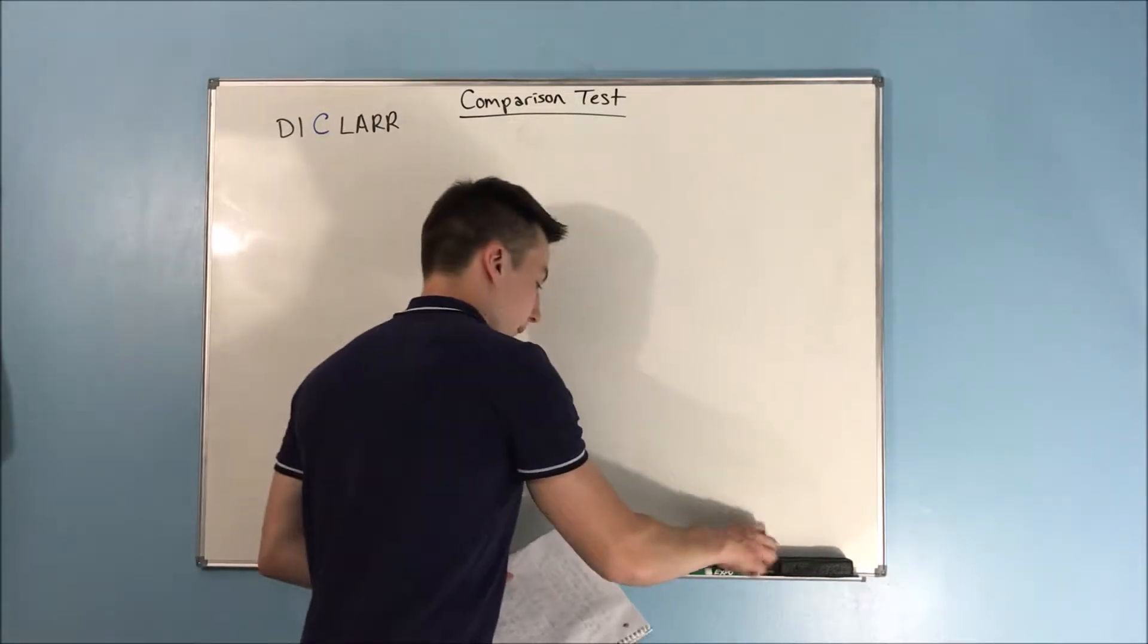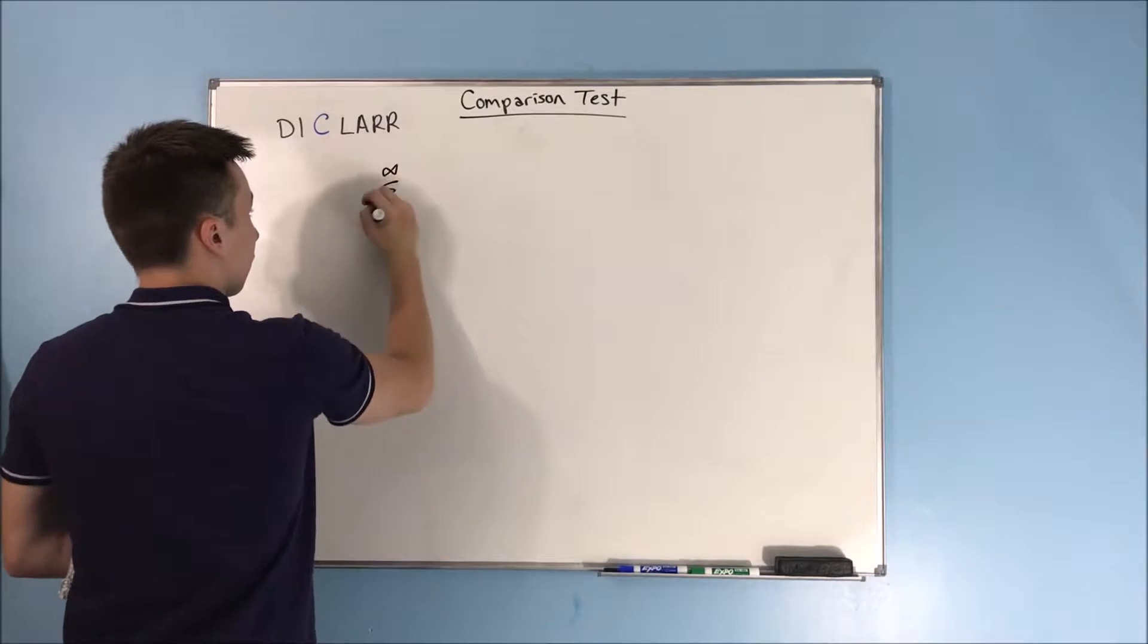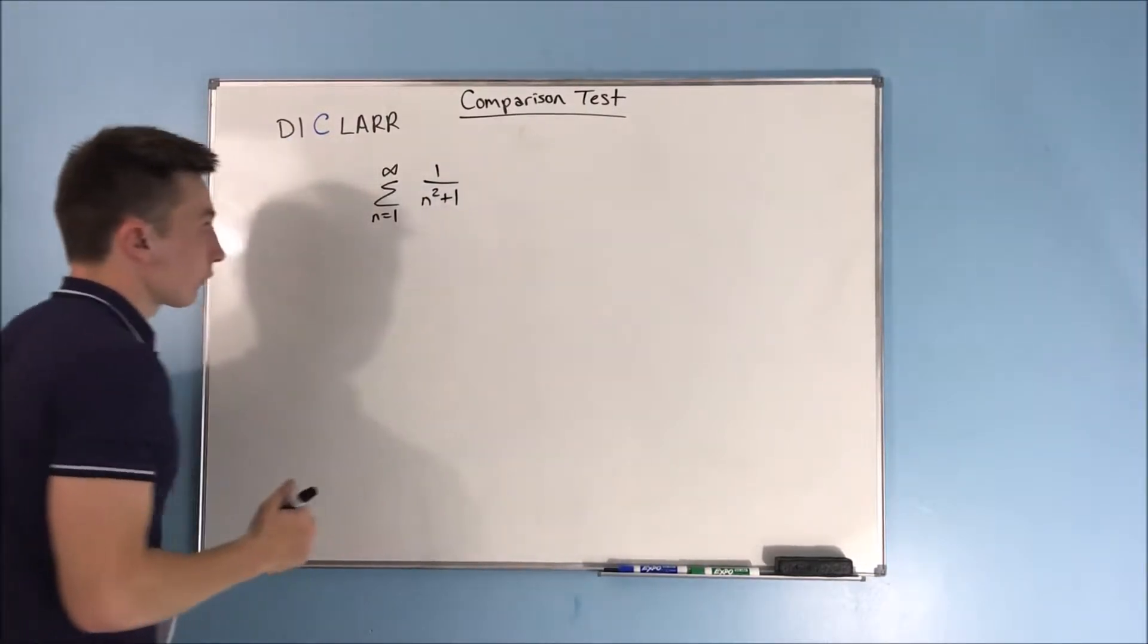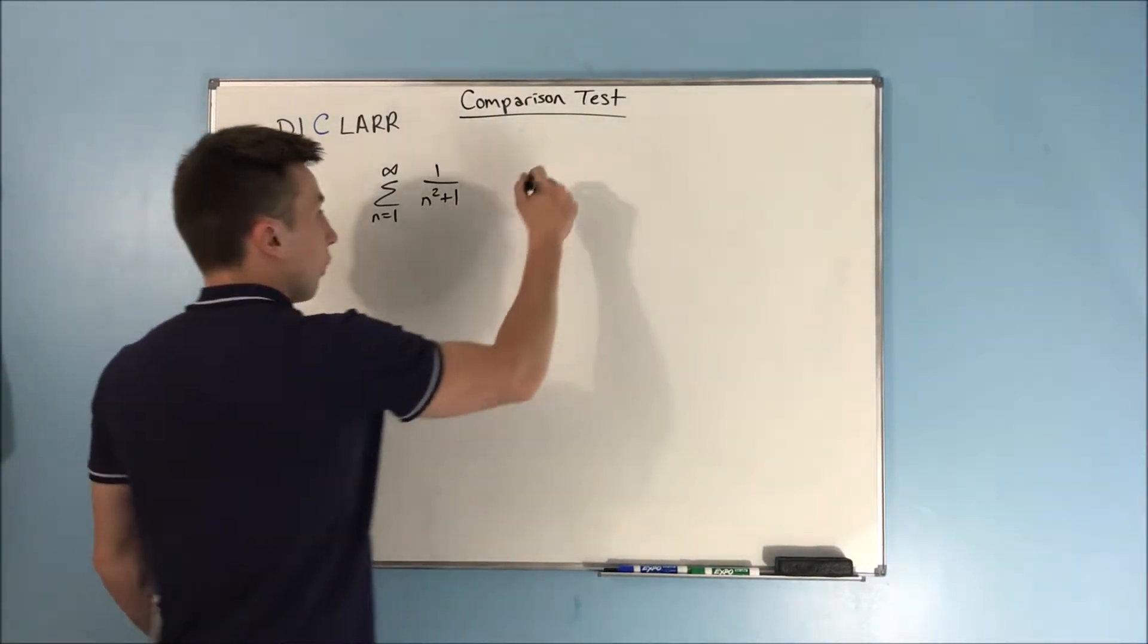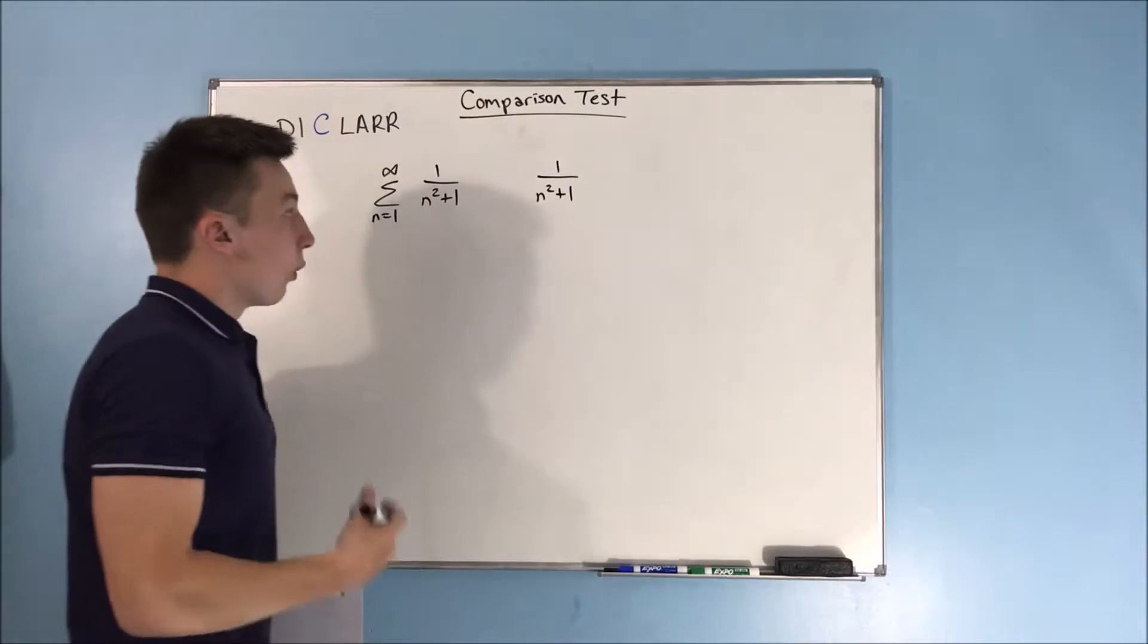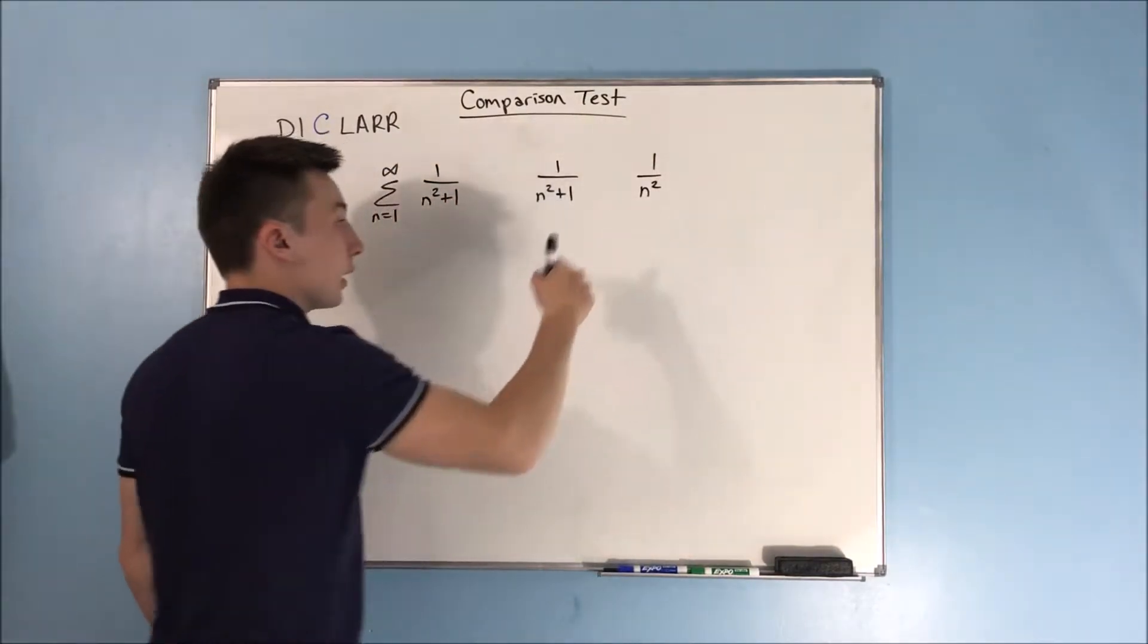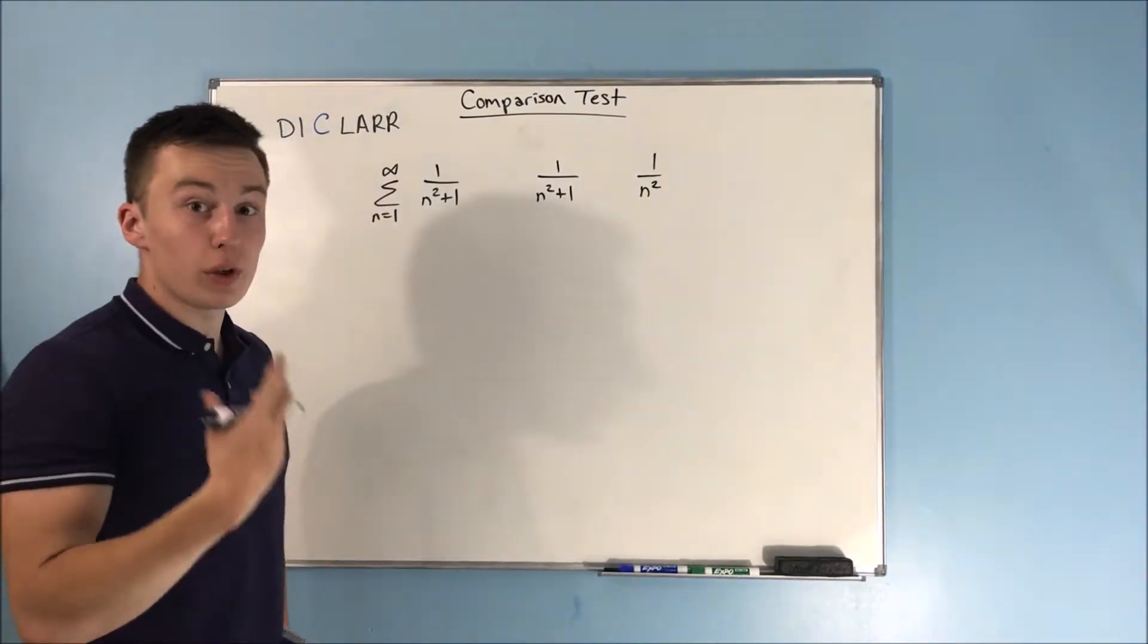For example, let's do here the sum from n equals 1 to infinity of 1 over n squared plus 1. Now this actual series by itself, this 1 over n squared plus 1, we know that is going to be very close to 1 over n squared, right? You just eliminate that plus 1 and you have 1 over n squared here. And that's something that we know converges.